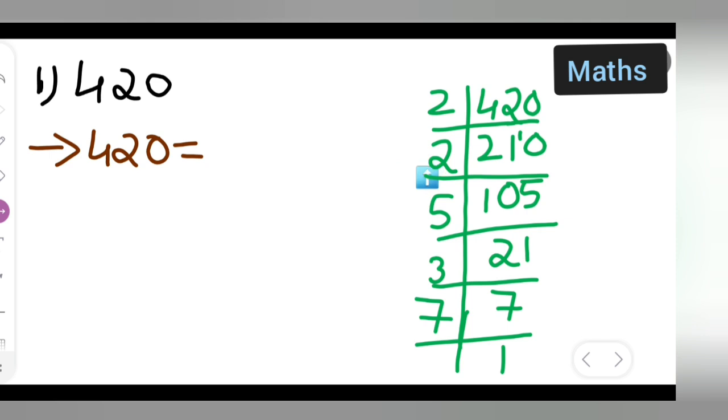Now how many times does 2 come? 2 times. So we multiply 2 × 2. Then we have 5, which appears once. Then 3 and 7, each appearing once.